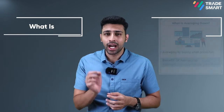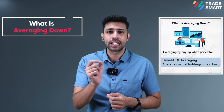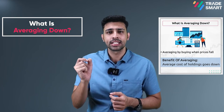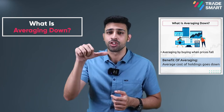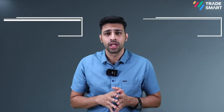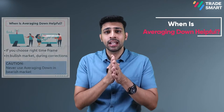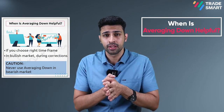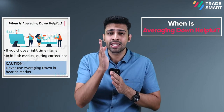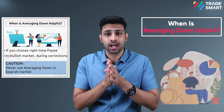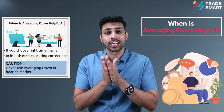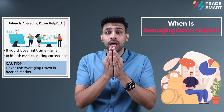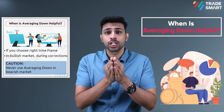If you do averaging when the prices of stocks are going down, this is called averaging down. This is really helpful if done in the right time frame. During a rising market, averaging down is done during corrections, and this can be really helpful.